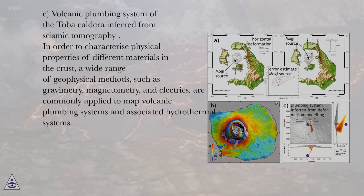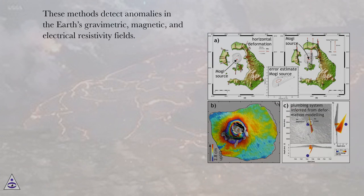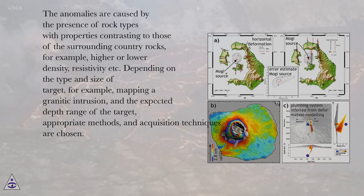In order to characterize physical properties of different materials in the crust, a wide range of geophysical methods — such as gravimetry, magnetometry, and electrics — are commonly applied to map volcanic plumbing systems and associated hydrothermal systems. These methods detect anomalies in the earth's gravimetric, magnetic, and electrical resistivity fields. The anomalies are caused by the presence of rock types with properties contrasting to those of the surrounding country rocks, e.g., higher or lower density, resistivity, etc.